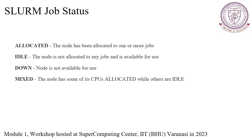SLURM job status codes provide valuable information about the progress and outcome of jobs. The Allocated state indicates that the node is assigned and allocated to a job. The Idle state indicates nodes are not allocated to any jobs and are available for use — these nodes are ready to accept new job allocations and have unused computing resources. The Down state means the node is unavailable for use, which could be due to maintenance, hardware issues, or other reasons preventing the node from participating in the cluster. The Mixed state indicates nodes have a combination of allocated and idle CPUs.